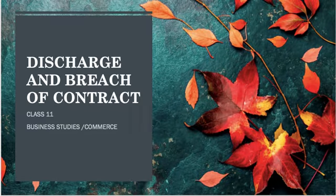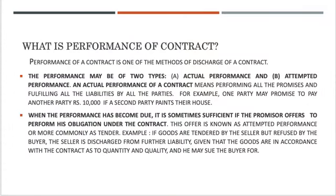Class 11 Business Studies Commerce. What is performance of contract? Performance of contract is one of the methods of discharge of a contract. The performance may be of two types: actual performance or attempted performance.